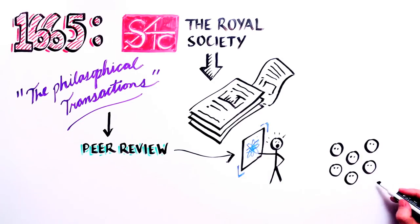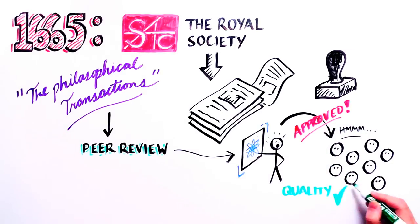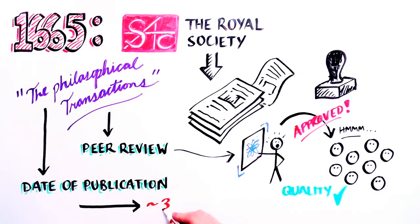This publishing model established the concept of peer review to ensure scientific quality and the defined date of publication to establish priority of discovery. These principles have laid the foundation for the nearly 30,000 scientific journals that exist today.